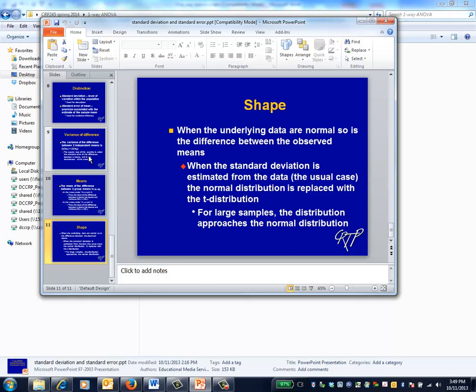For large samples, the sampling distribution will be normal in any case because of the central limit theorem. When the standard deviation is unknown and thus estimated from the data, the normal distribution is replaced with a t-distribution. And for large sample sizes, the t-distribution is very close to the normal distribution.